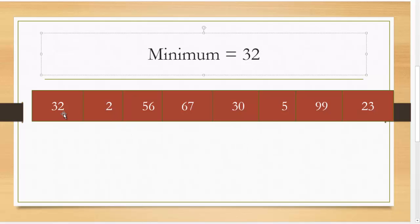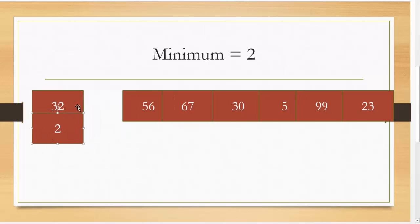Again, 32 is my minimum now currently. Now I'm going to check the next element which is 2 and that is smaller. 56 is not smaller than 2. 67 is not smaller than 2. 30 is not. 5 is not. 99 is not. 23 is not. So now I'm done looping through my array and I see that 2 is the minimum and I will swap it with position 0 which is 32. So 32 goes where 2 was in position 1 and 2 goes where 32 was in position 0.